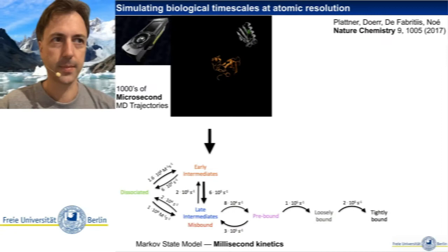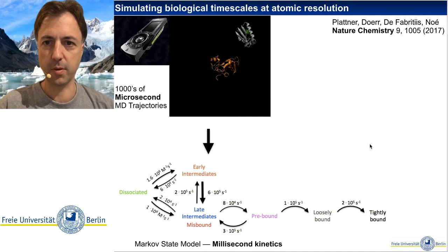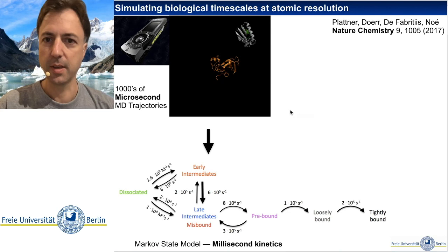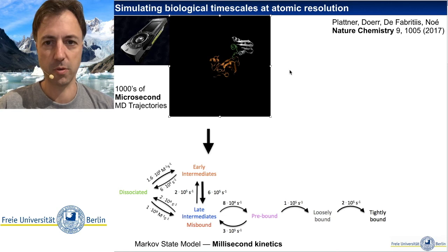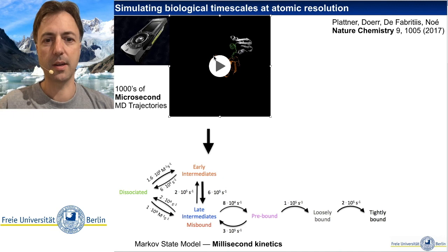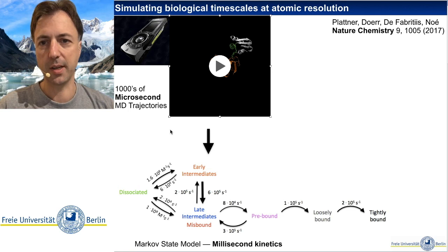One of the more recent applications of this technique involves adaptive sampling — a special form of reinforcement learning. For the protein-protein association of Barnase-Barstar, we can simulate short trajectories and observe the first association step to an intermediate, and then transitions into bound states, but we cannot easily simulate the dissociation of the tightly bound complex.